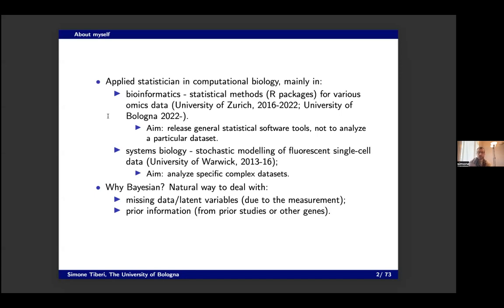With frequentist statistics, it's very hard to actually work properly with missing data and propagate the uncertainty forward. In Bayesian statistics, that's a lot more intuitive, because every missing point is just a parameter — you treat it just like any other parameter and sample it. So it gives a very natural framework to deal with latent variables.